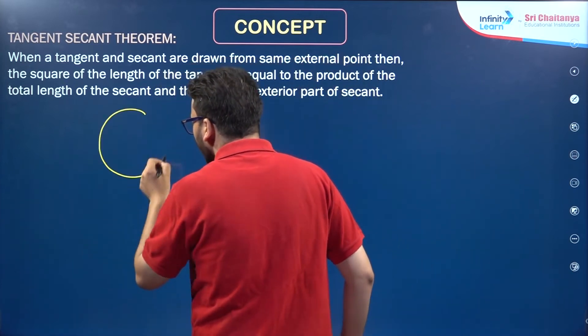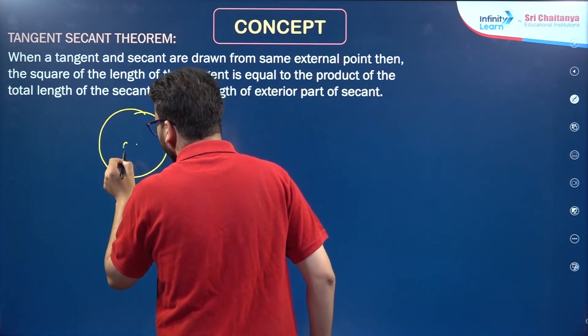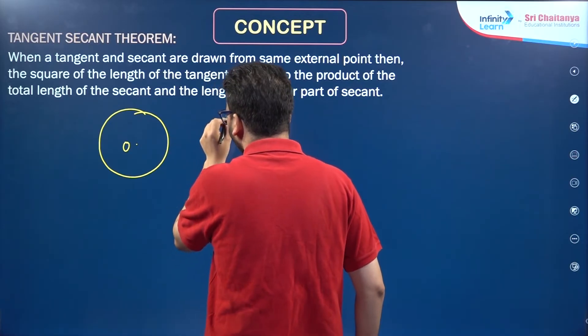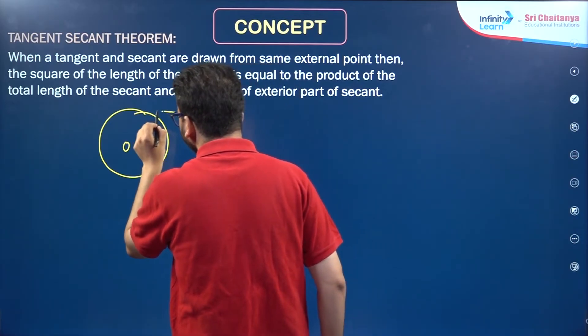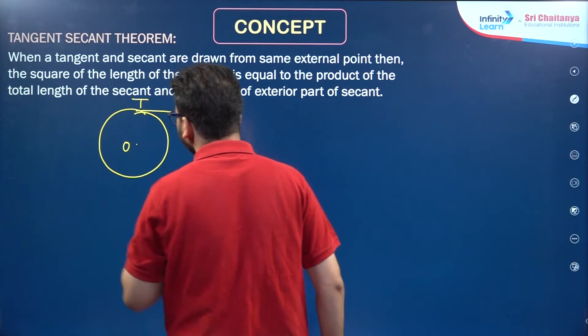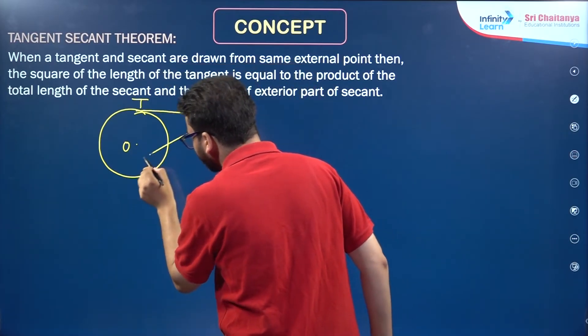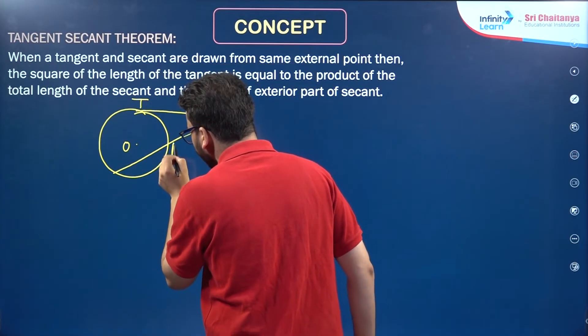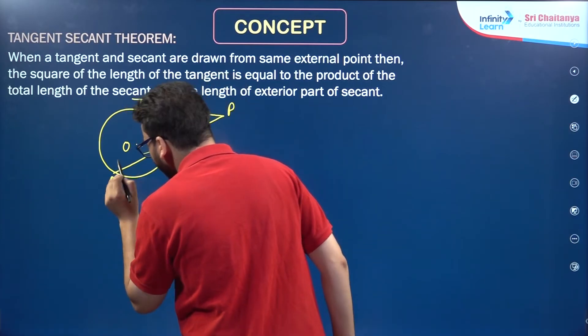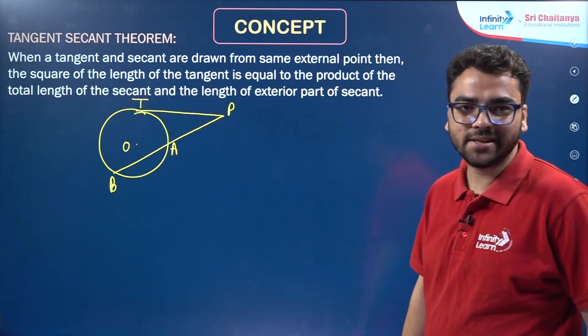If I have a circle here, suppose from this point P I'm drawing a tangent to the circle at point T. From the same point P, I'm drawing a secant to the circle through points A and B.